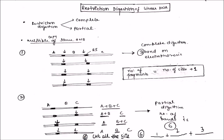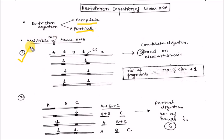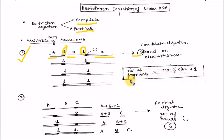The next topic is restriction digestion of linear DNA, which may be complete digestion or partial digestion. In complete digestion of linear DNA, all restriction sites are cleaved by the restriction enzyme. Here, two restriction sites — one and two — are present. After complete digestion, you get three bands or three fragments: A, B, and C. The number of fragments in the complete digestion of linear DNA is equal to the number of restriction sites plus one — one more than the number of restriction sites. In circular DNA, fragments equal the number of sites, but in linear DNA, fragments equal the number of sites plus one.